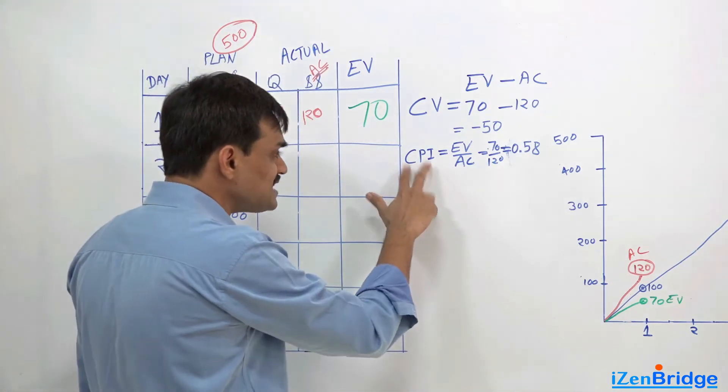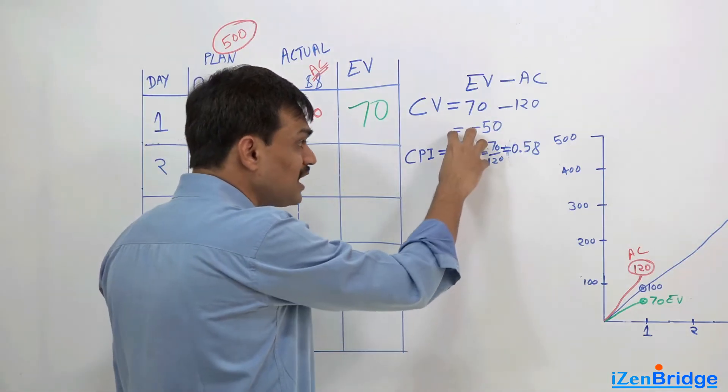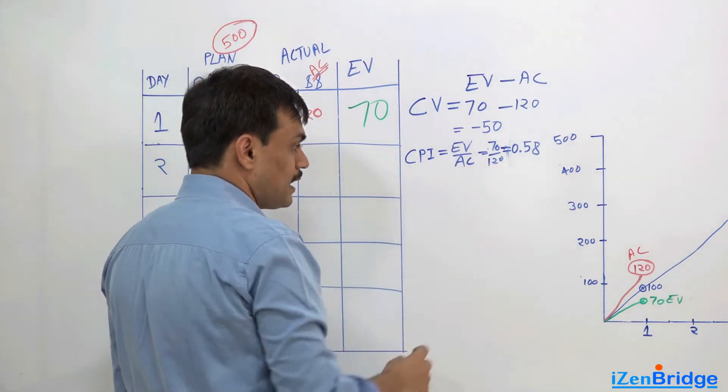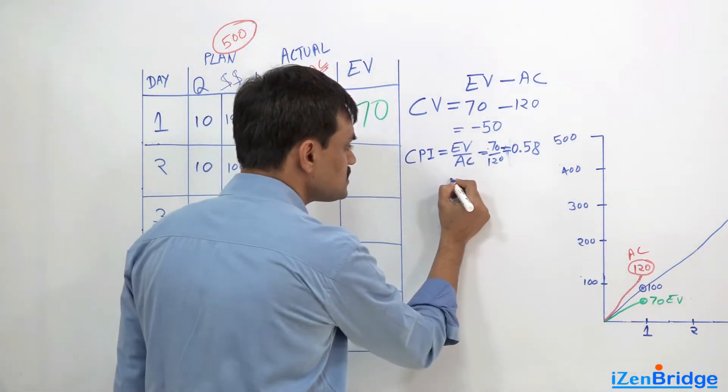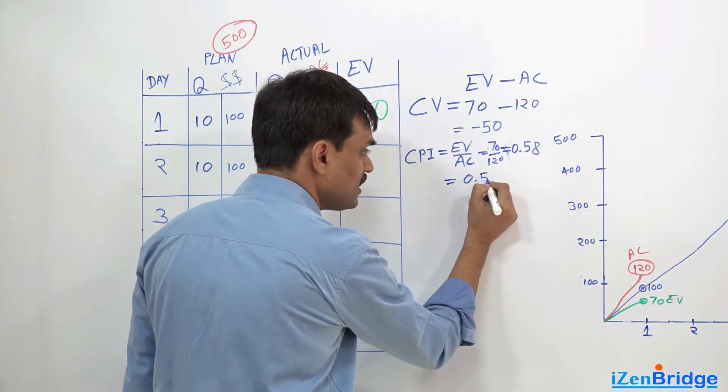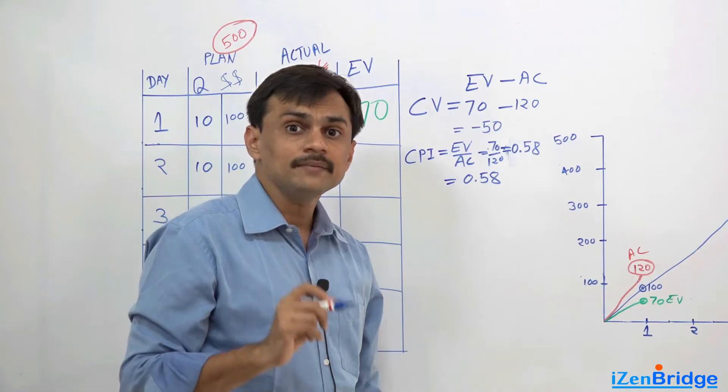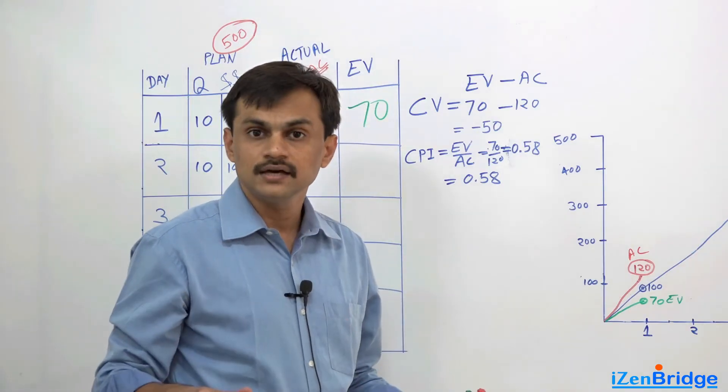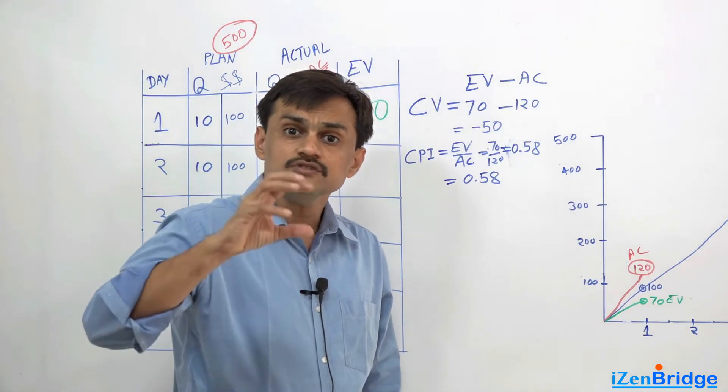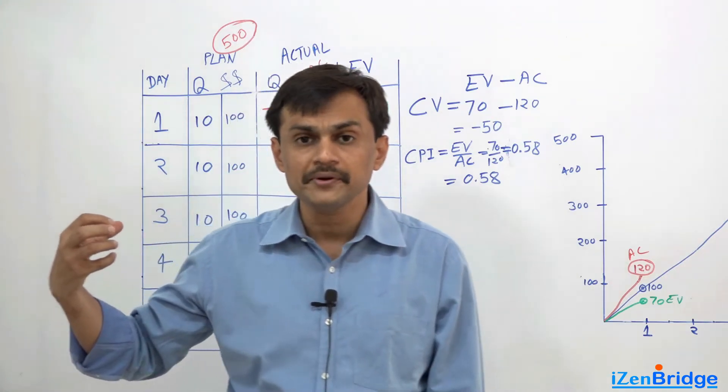So when the CPI, the cost performance index, shows that we are earning against spending, and if my cost performance index is telling me 0.58, it means I am spending $1 and I am getting value of 58 cents. That is it. It is like my performance is 42 percent behind, more or less.